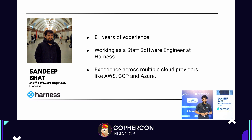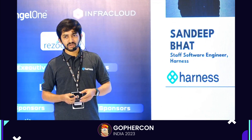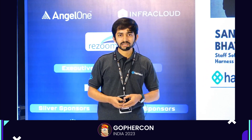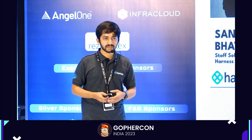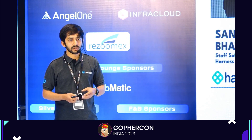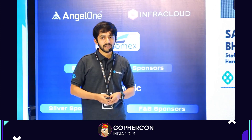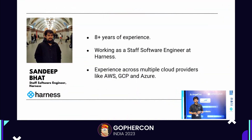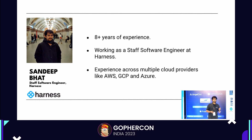Before we begin, I would like to introduce myself. I have close to eight-plus years of experience in the industry. I began my career at Hewlett Packard Enterprise, then joined a startup which was eventually acquired by Cisco. I spent the next one and a half years at Cisco working on cloud cost optimization, then joined Walmart for two and a half years, developing in-house load balancers that could scale to huge amounts of traffic. Post that, I joined Harness, where I currently work as a staff software engineer. Harness operates in the DevOps space and I'm part of a team working on cloud cost optimization — my second time.